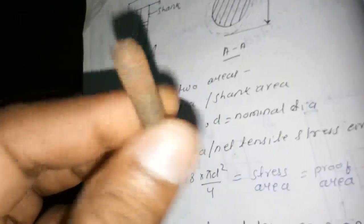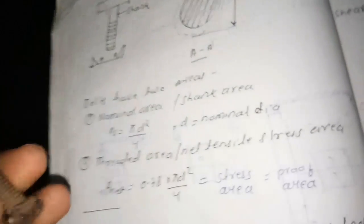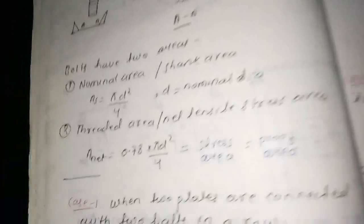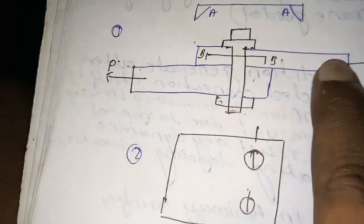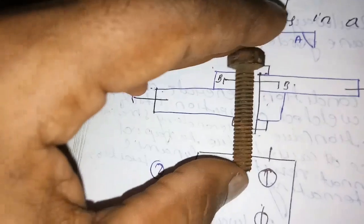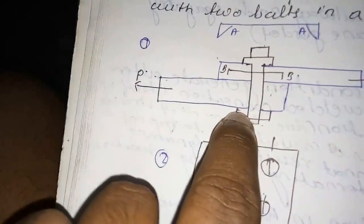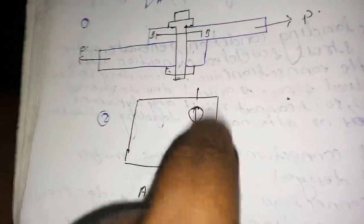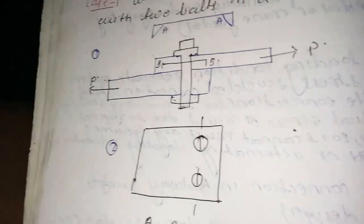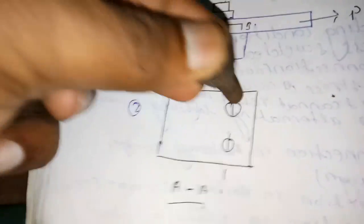There are two types of connections using this bolt: the first is the lap connection and the second is the butt connection. In a lap connection, you overlap two members — the first member and the second member are overlapped — and you connect them using a bolt, fixing the nut at the base. The holes for inserting the bolt are called die holes.